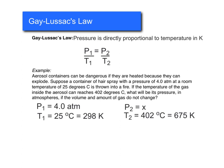Okay, now if we plug that into our equation, we get 4.0 over 298 is equal to X over 675. Alright, and then if we do 4.0 divided by 298 times 675, that gives us an X of 9.1 atmospheres. So that's really high pressure. So don't throw your can of hairspray into the fire.